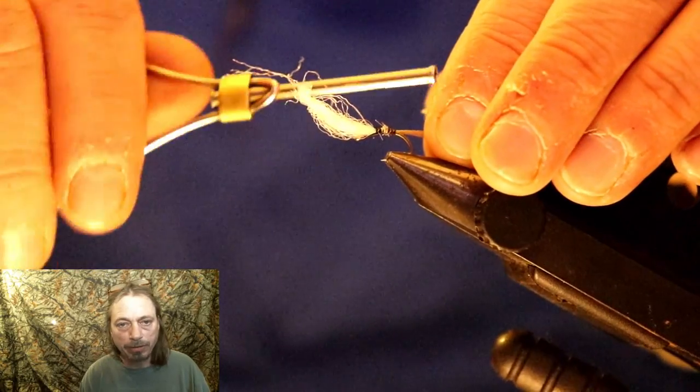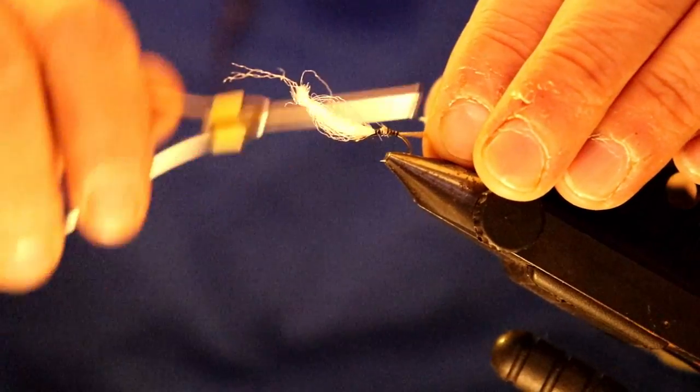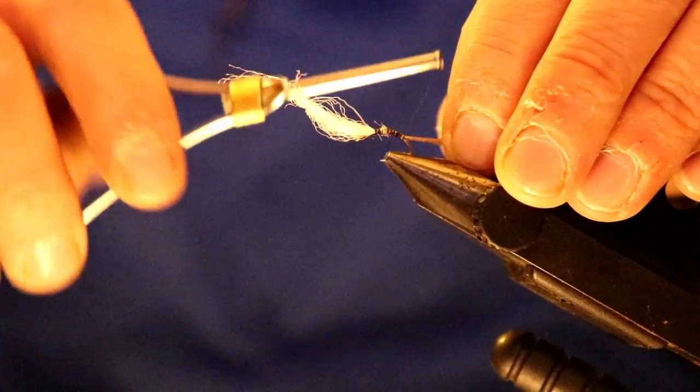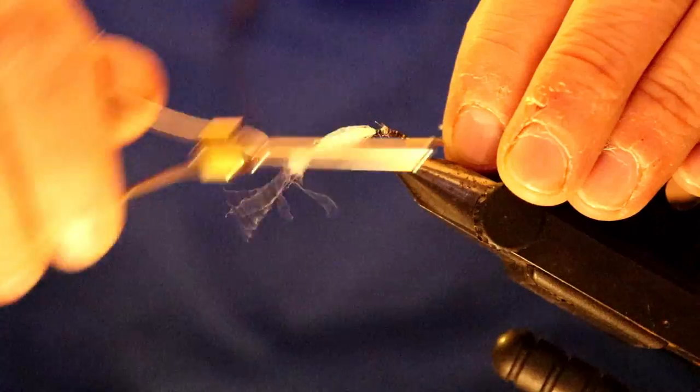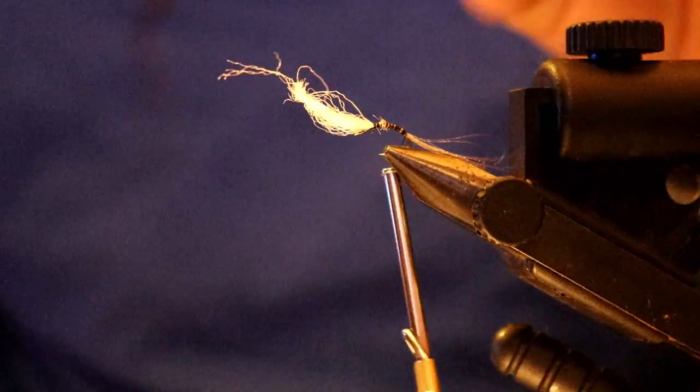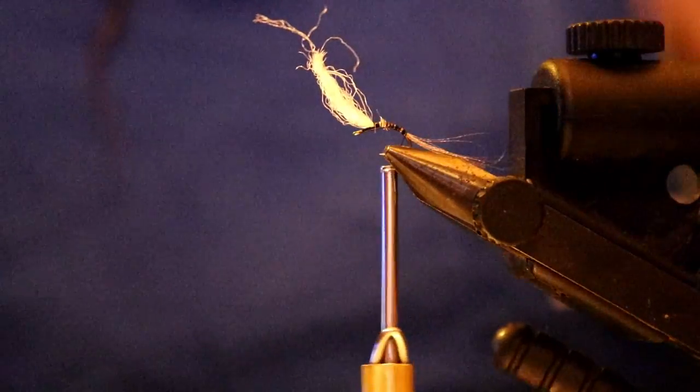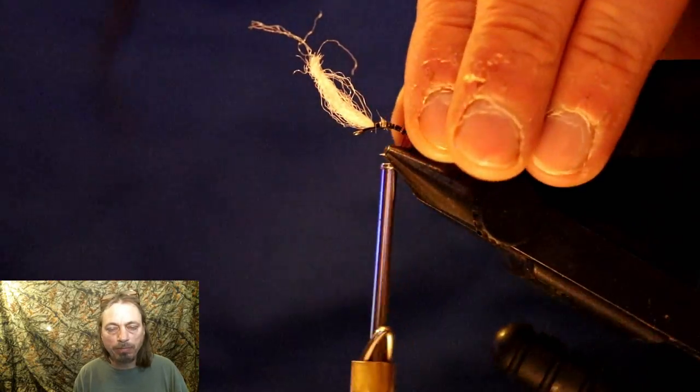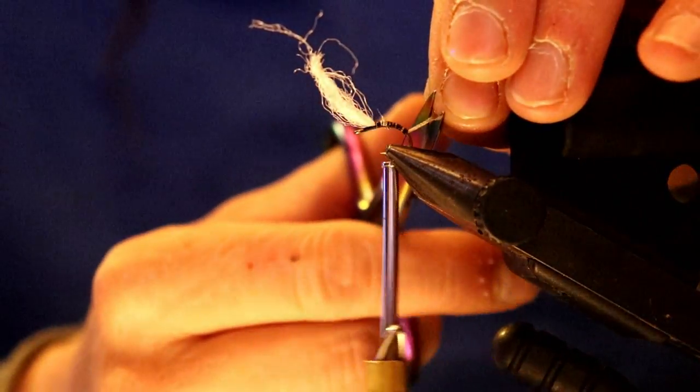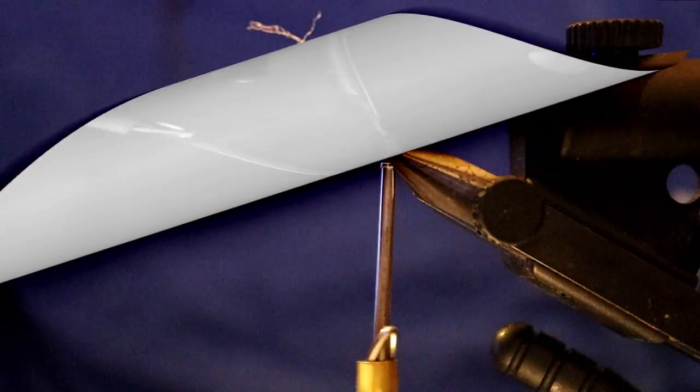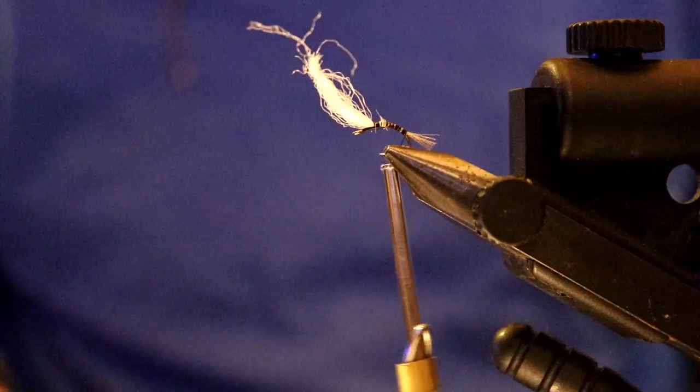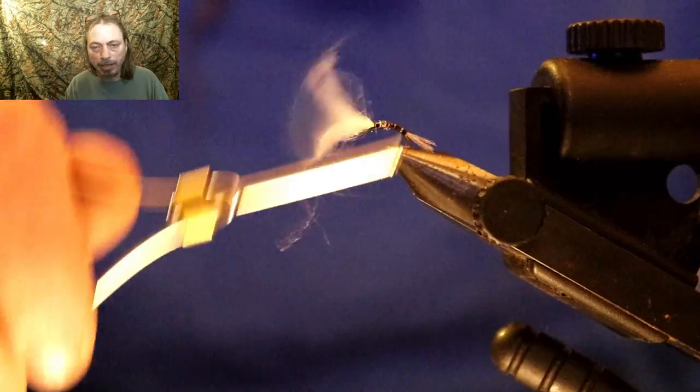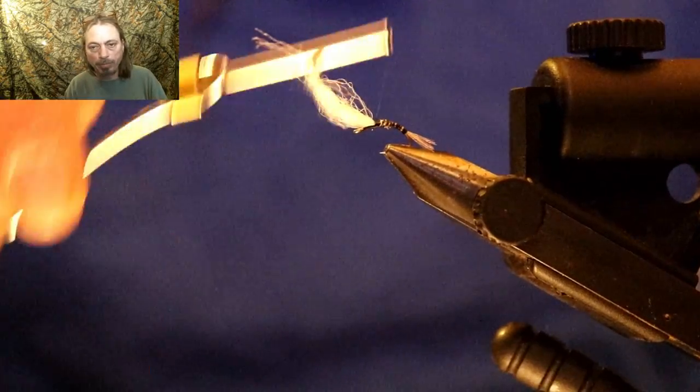We're gonna cut that organza off between a quarter and a half inch long. Now we're gonna start running our thread up and building up the body, making that taper a nice taper all the way up to the wing.